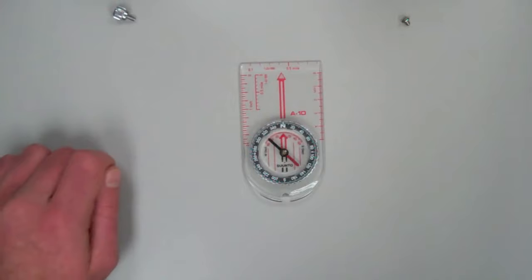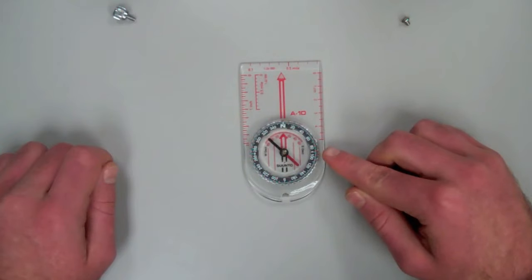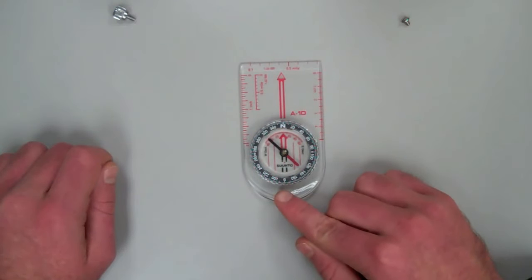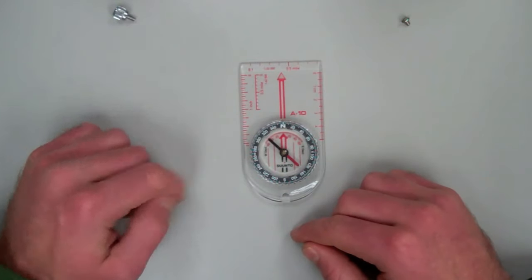North, the N on the dial, is at 0 degrees and 360 degrees. East is at 90 degrees. South is at 180 degrees. West is at 270 degrees.